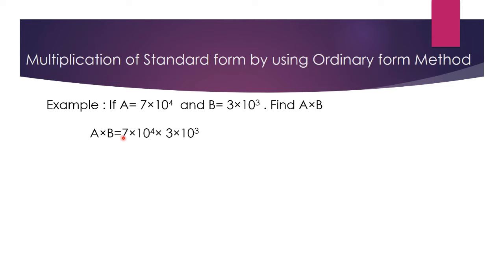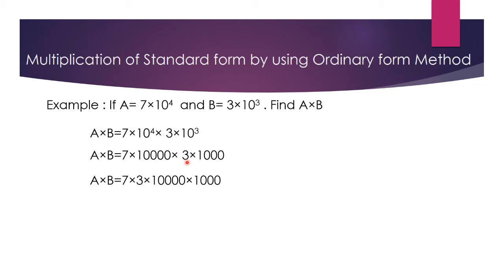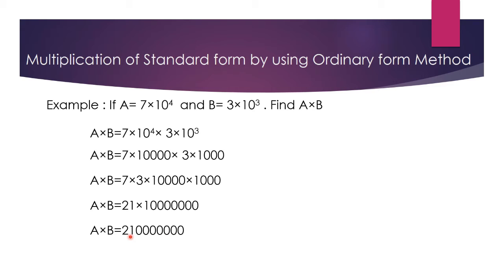So a multiplied by b will be equal to 7 multiplied by 10 to the power 4, and b's value is 3 multiplied by 10 to the power 3. We will convert this standard form into ordinary form: 10 to the power 4 equals 10,000, and 10 to the power 3 equals 1,000. So we get 7 multiplied by 10,000, multiplied by 3 multiplied by 1,000, which gives 1 multiplied by 10 to the power 8.